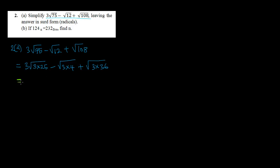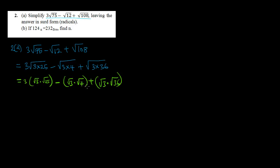We can split this up as 3 times √25 times √3, minus √3 times √4, plus √3 times √36. This comes from the rule that √(a×b) = √a × √b.